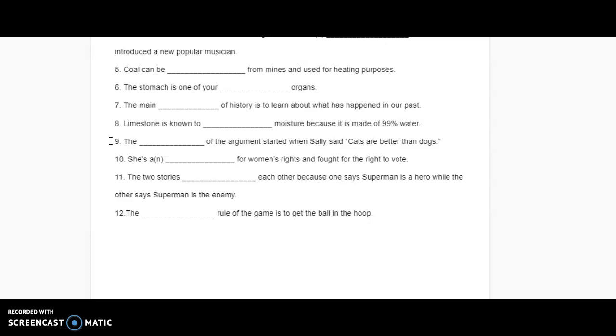Nine: The blank of the argument started when Sally said cats are better than dogs. Ten: She's a blank for women's rights and fought for the right to vote. Eleven: The two stories blank each other because one says Superman is a hero while the other says Superman is the enemy.